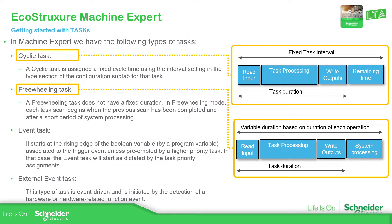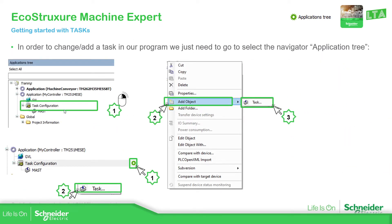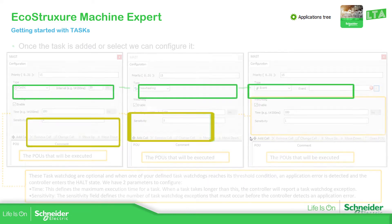Now what we're going to do is check how to add a task. In the task configuration inside the application tree, we can find this task configuration which has more information. Once we are online, we can see the execution of the different MAST tasks that we have. By default in the software, we have one called MAST. To add a new task, right-click and select Add Object, then add the task. Another way is to go into the task configuration and click the plus icon to add a task.